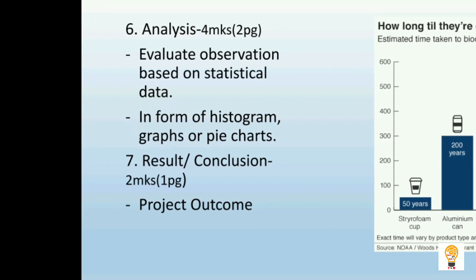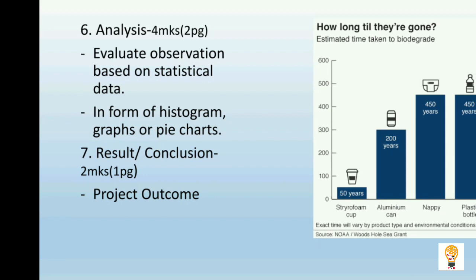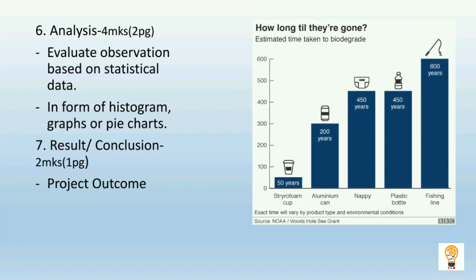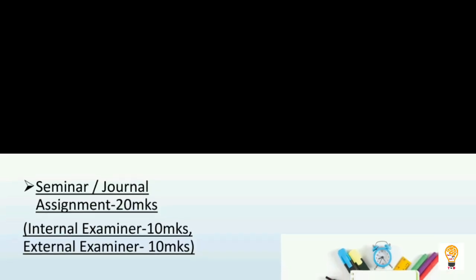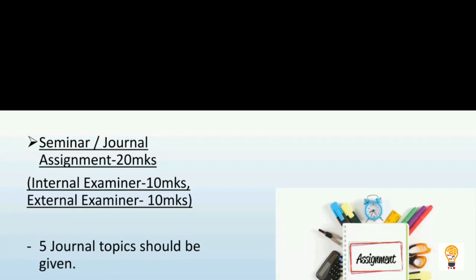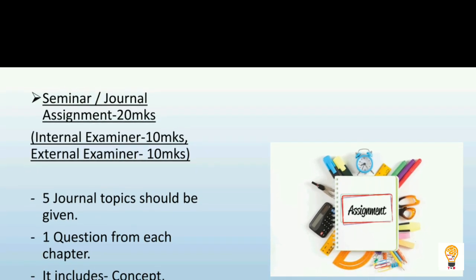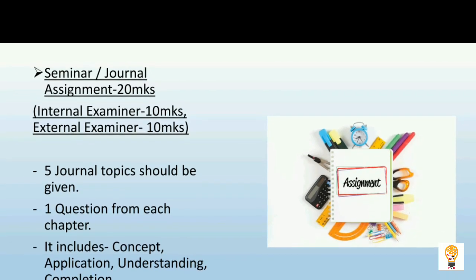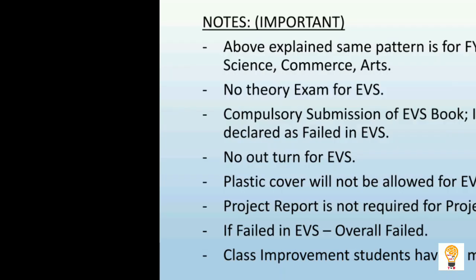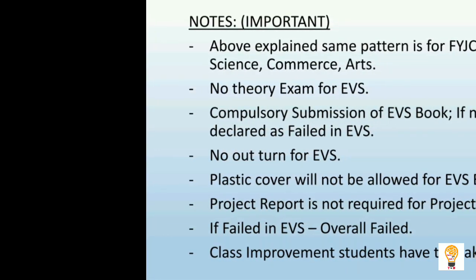The seventh component is result or conclusion, which carries 2 marks and should be written on 1 page. It should include the project outcome — what you are concluding from the project. Seminar or journal carries 20 marks, in which 10 marks are with the internal examiner and 10 marks with the external examiner. It should cover 5 topics, one question from each chapter, which should include concept, application, understanding and completion.